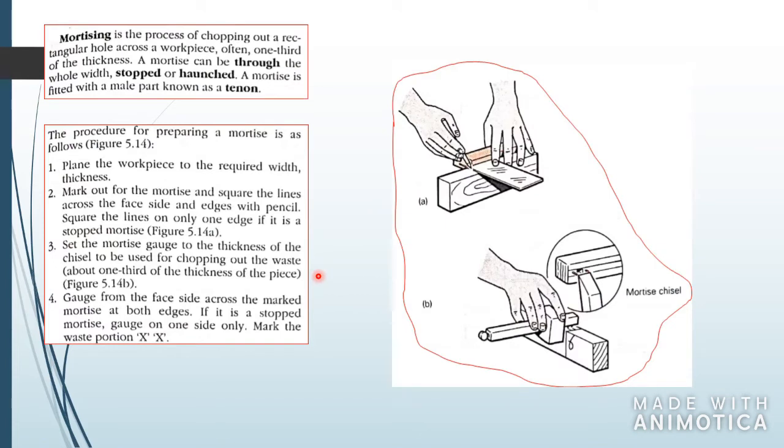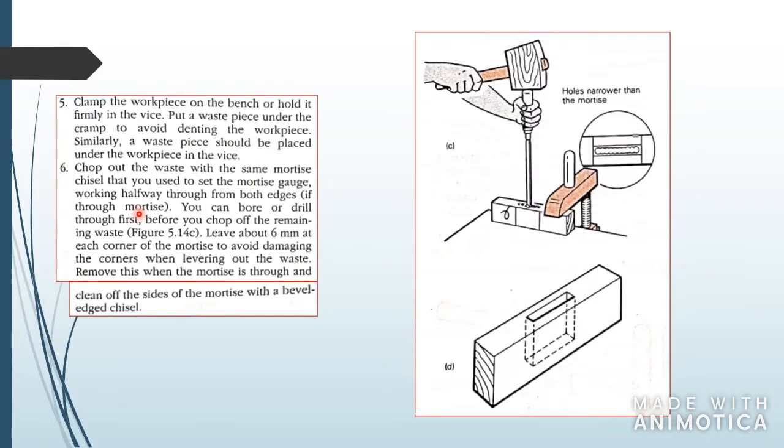Mortising is the process of chopping out rectangular holes. The term mortise and tenon go together - the tenon goes into the mortise and creates a very strong joint. Here you see the procedures for preparing the mortise. Make sure you follow the procedures, such as marking out your workpiece, clamping down your work, and making sure your tools are nice and sharp so you don't make any mistakes.